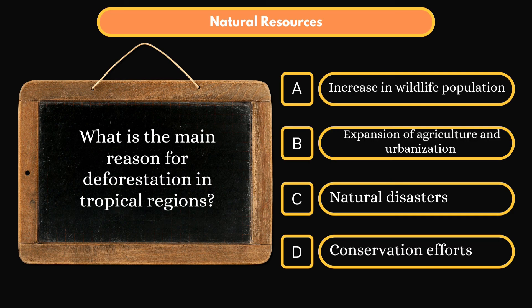What is the main reason for deforestation in tropical regions? Option A: Increase in wildlife population. Option B: Expansion of agriculture and urbanization. Option C: Natural disasters. Option D: Conservation efforts. Correct answer is Option B: Expansion of agriculture and urbanization.